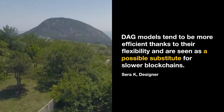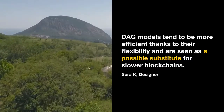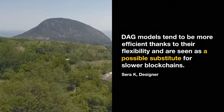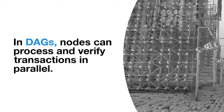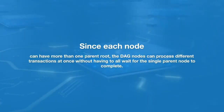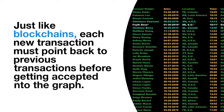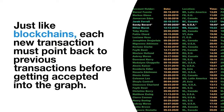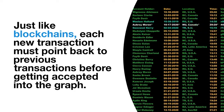DAG models tend to be more efficient thanks to their flexibility and are seen as a possible substitute for slower blockchains. In DAGs, nodes can process and verify transactions in parallel. Since each node has more than one parent root, the DAG nodes can process different transactions at once without having to all wait for the single parent node to finish. Just like blockchains, each new transaction must point back to the previous transactions before getting accepted into the graph.